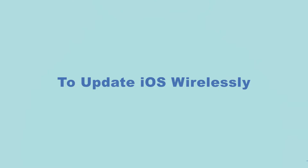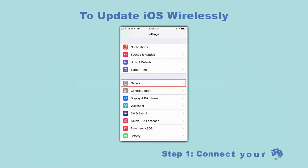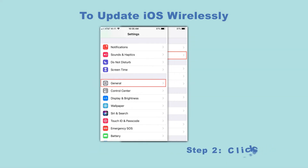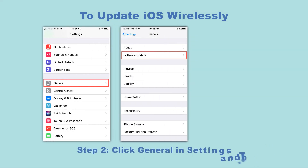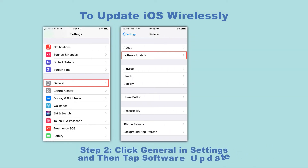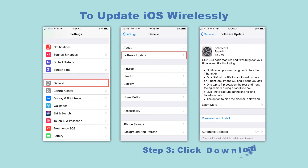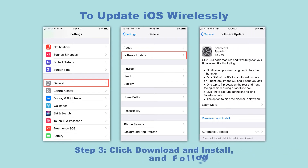To update iOS wirelessly: Step 1: Connect your iPhone to the internet. Step 2: Click General in Settings and then tap Software Update.